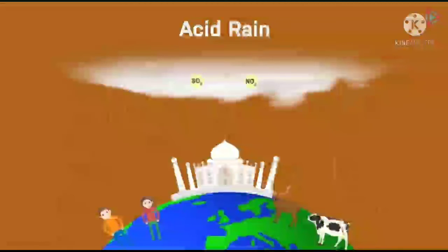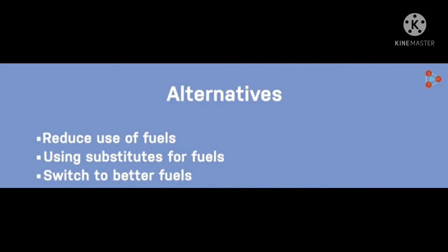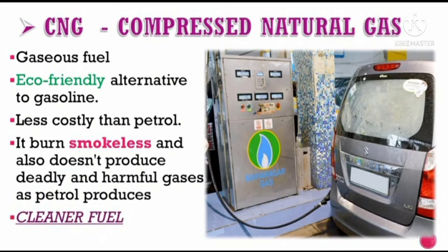To reduce the use of fuels and switch to better alternatives, the use of diesel and petrol in automobiles is being replaced by CNG — compressed natural gas — which is a gaseous fuel that is eco-friendly and less costly than petrol. CNG burns without smoke and does not produce the deadly harmful gases that petrol produces. That is why CNG is called a cleaner fuel. We can reduce the negative impact on the environment by choosing the right fuel. This completes our chapter.